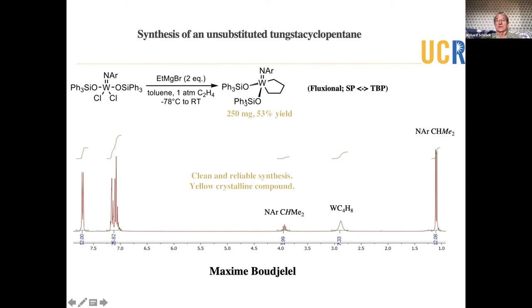And we made one, as shown here. This is a diisopropylphenolamidotungsten complex. Triphenylsiloxide, two triphenylsiloxides, metallicyclopentane. It's actually made by a reaction that doesn't involve an alkylidine. It involves a diethyl intermediate, which then makes an ethylene complex, which reacts with added ethylene to give the metallicyclopentane.